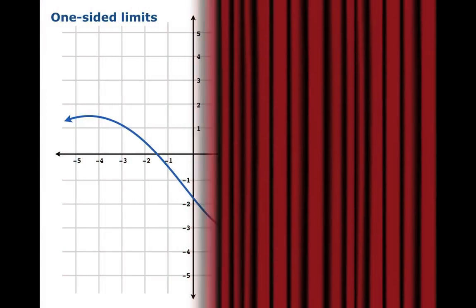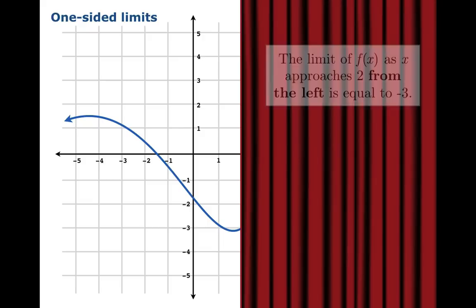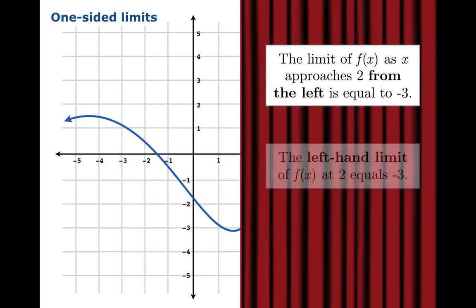You could play the same game by drawing the curtain just from one side. So if we drew the curtain in from the left side, in this case, the value of the function seems to get closer and closer to negative 3 as the argument gets closer to 2 coming from the left. So we'll say that the limit of f of x, as x approaches 2 from the left, is equal to negative 3. Or we could just say the left-hand limit of f at 2 equals negative 3.